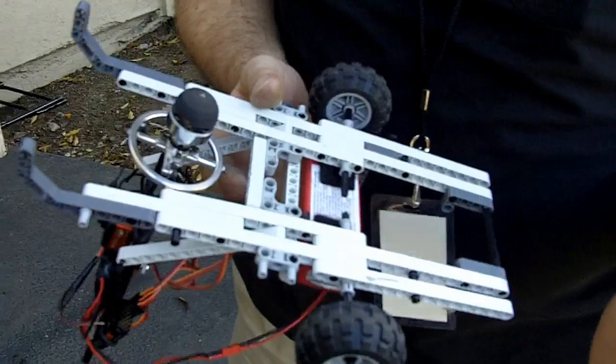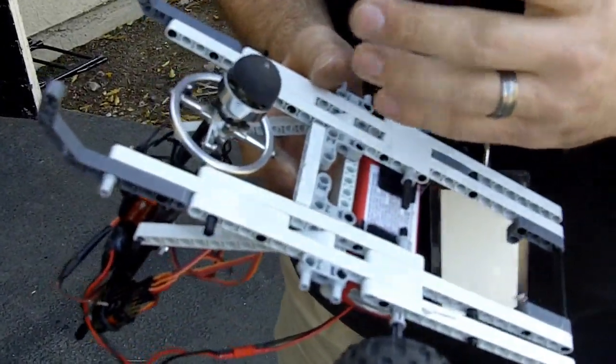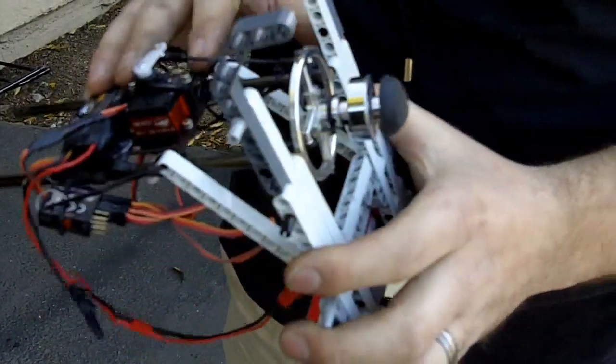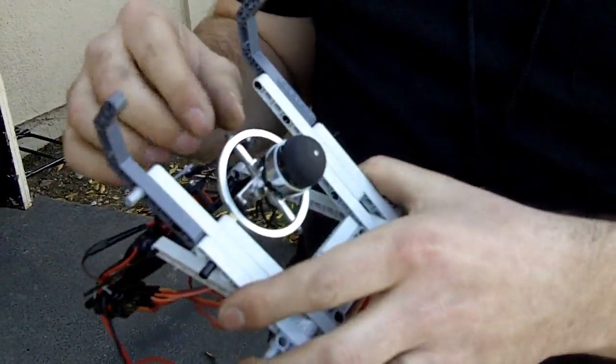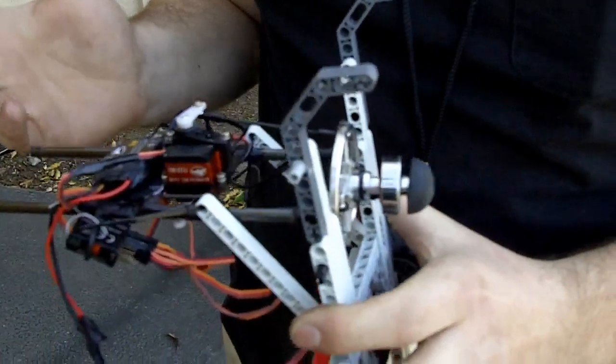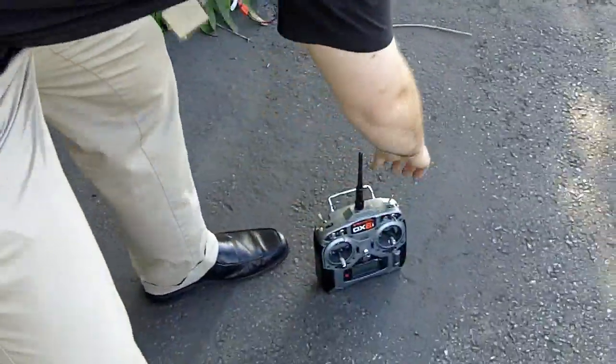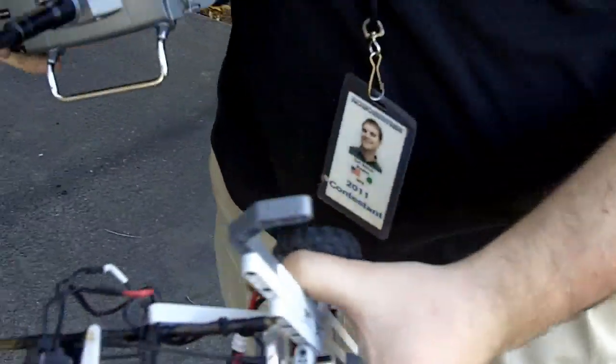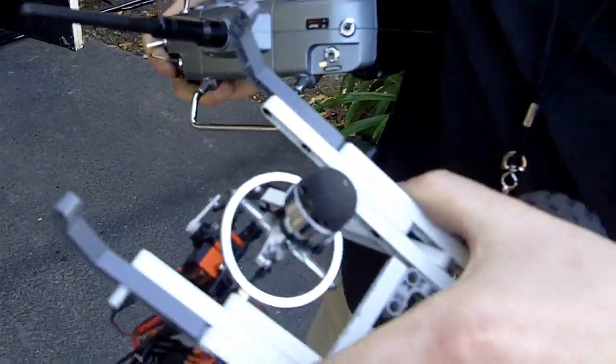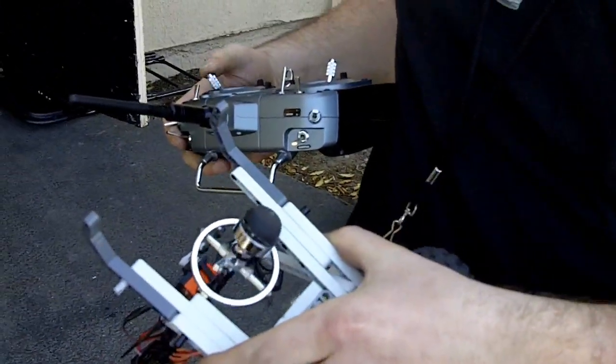So right here we have a simple, just one gimbal unit that consists of a brushless airplane motor, a two-axis gimbal, just some RC servos and receiver. And without any microprocessor intervention besides a simple radio controller, you can control the angle of this ball.